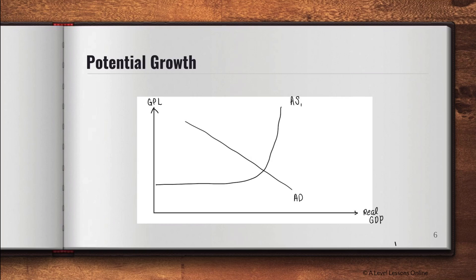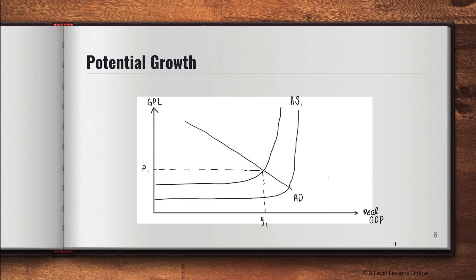So I've got my AS curve and my AD curve. The original output is Y1 at price level P1. When there's a rise in productive capacity — say due to improvements in technology — this causes a rise in potential growth, shown as a parallel outward shift of long-run AS from AS1 to AS2. The new equilibrium gives output Y2, where it intersects the original AD curve.